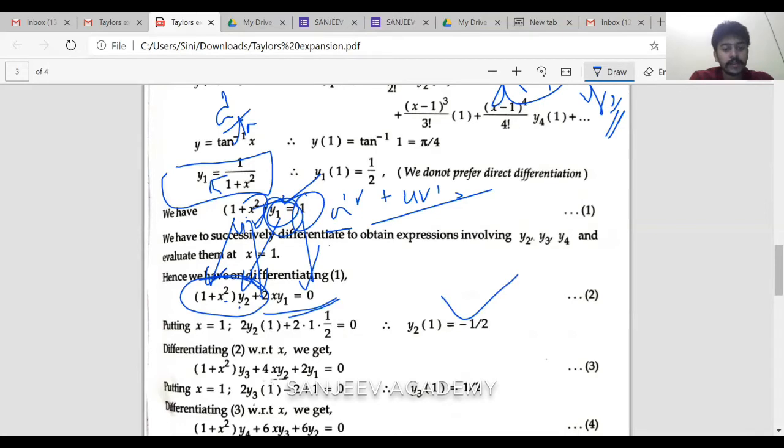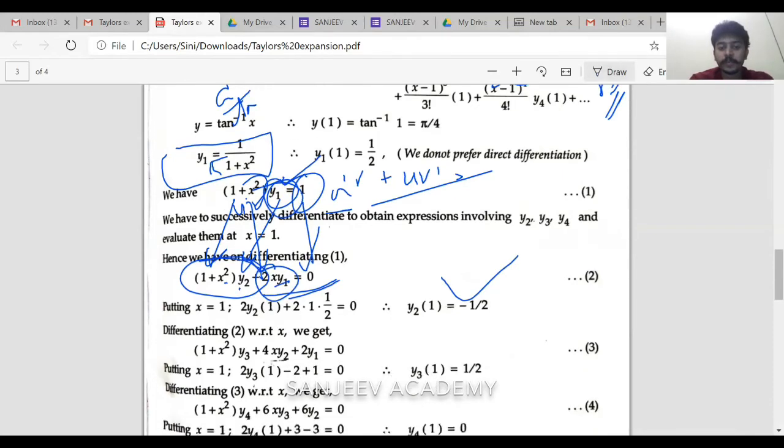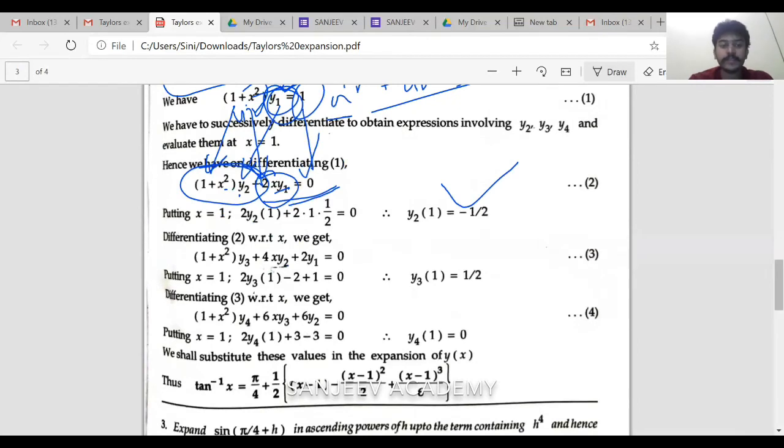Again do u v rule on this. 1 plus x square and y2. That is u v rule. And 2x y1. And again 2 as constant. X y1 is again what? U v rule. So if you are able to do the u v rule, you'll get the answer respectively. So you can just pause the video and just see where you are having, whether you are able to get it or not.